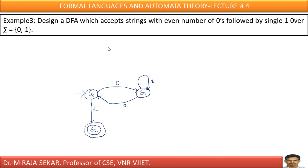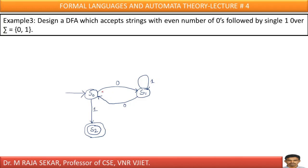Design a finite automaton that accepts strings with an even number of zeros followed by a single one, over input alphabet {0, 1}. Even number of zeros: for the first zero we go forward, for the second zero we come back. Third zero goes forward again, fourth zero comes back. After the fourth zero, if we keep a 1, we go to state S2. This is a self-explanatory, simple problem.